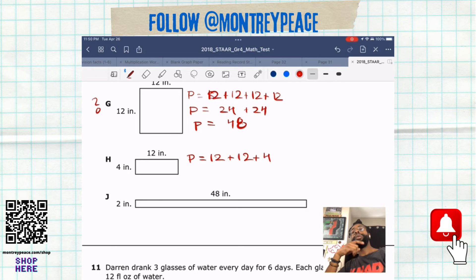We want to make sure though we didn't make a mistake, so go ahead and work the other two out. This one here is 12 plus 12 plus 4 plus 4. 12 and 12 is 24, and then 4 plus 4 is 8, and if you put 24 plus 8 is 32.